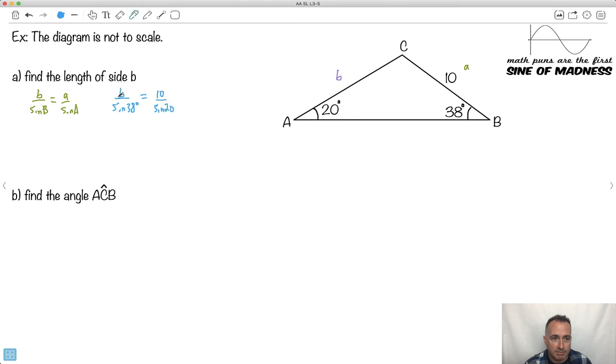Well, to get B by itself, I just multiply both sides by sine 38 to put it up to the top. So that means I'm going to go B equals 10 times sine of 38 degrees, all that over sine of 20 degrees. I guess I should have a little degrees here. There we go.